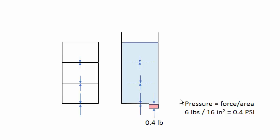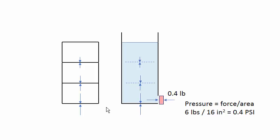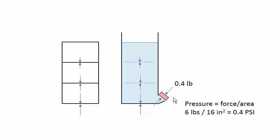What does that mean? That means if you open a hole at the bottom of the container that measures one by one inch, you need to apply a force of 0.4 pounds in order to prevent the water from coming out. The water pushes in all directions, so if you open a hole in the side, it's the same story — you need to apply a force of 0.4 pounds to stop the water from coming out. It even works upward: if you have an opening that curves upward, you need to apply 0.4 pounds of force to keep the water from gushing out.